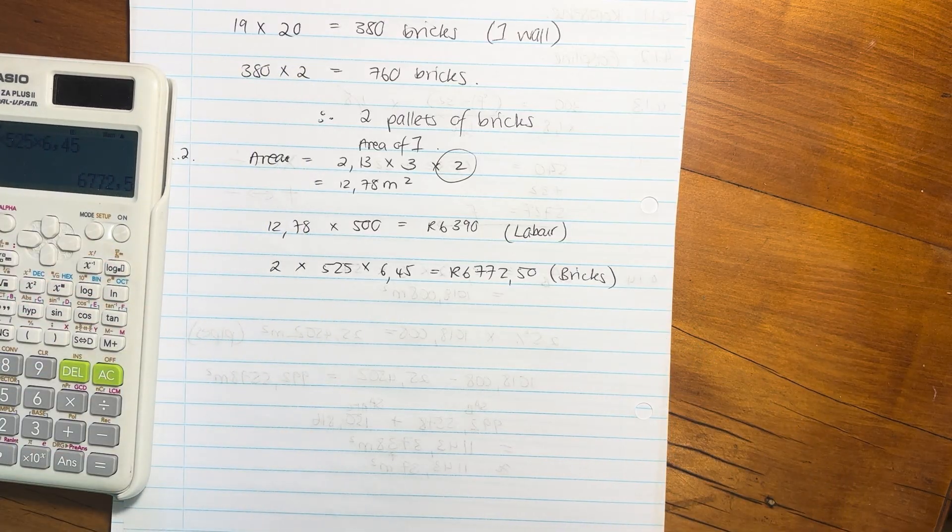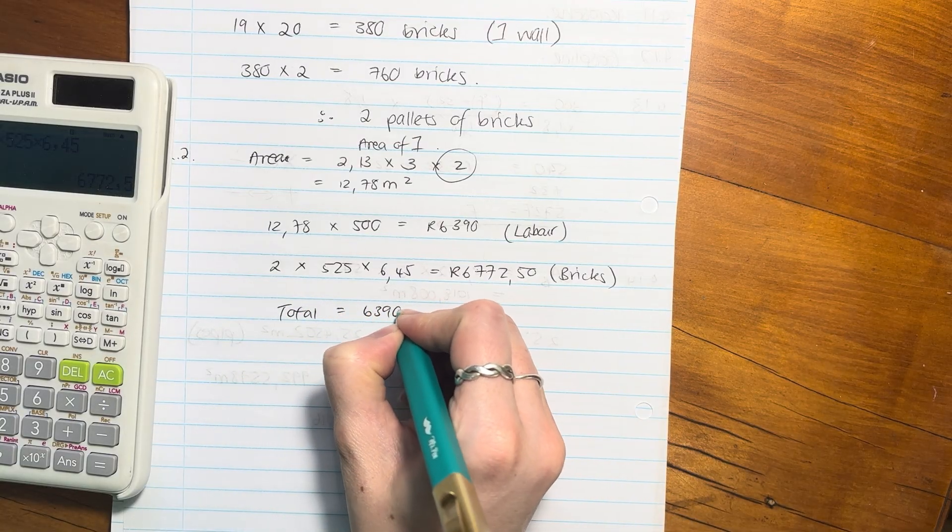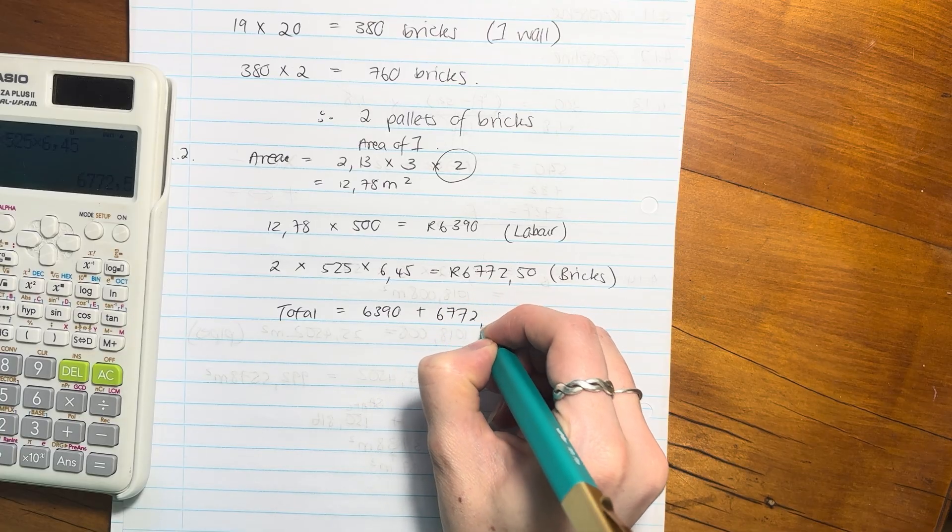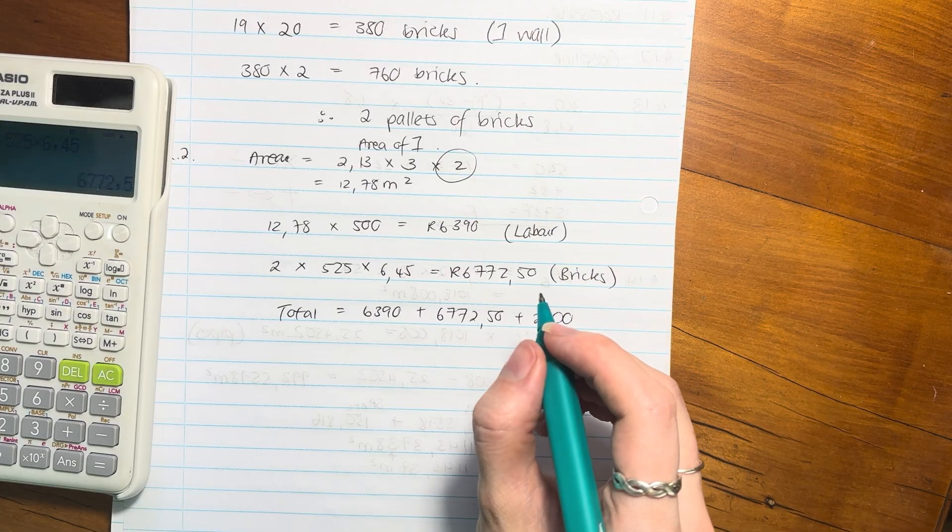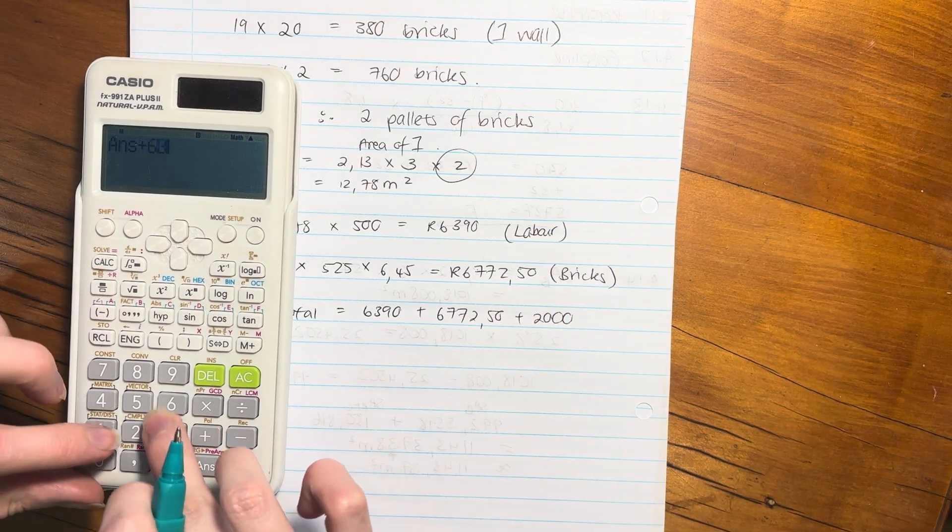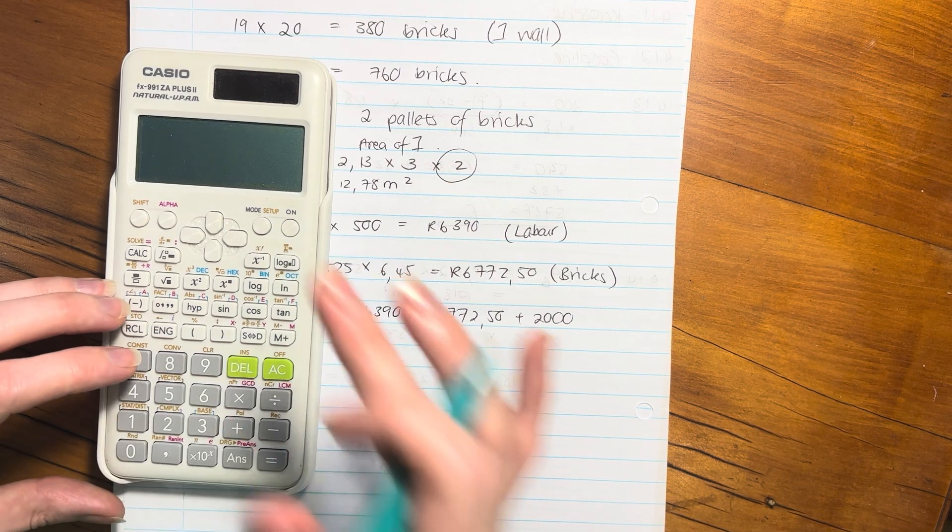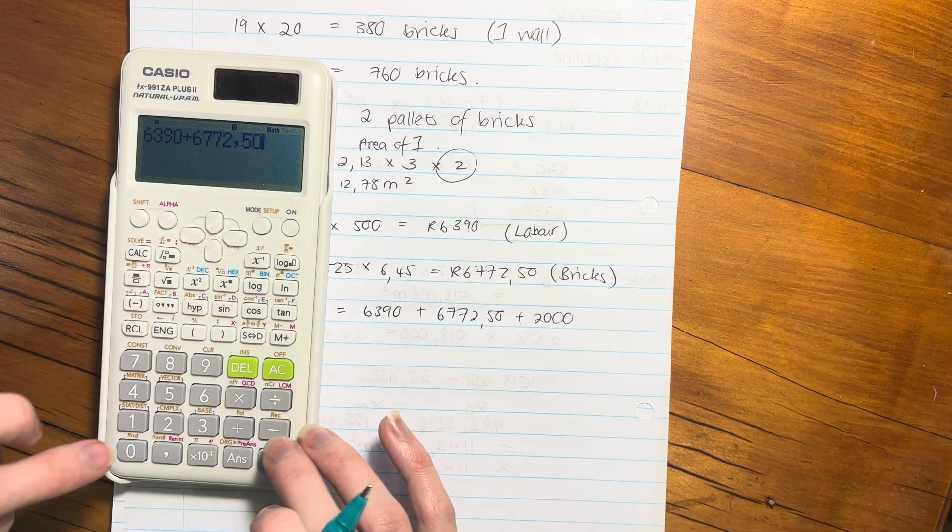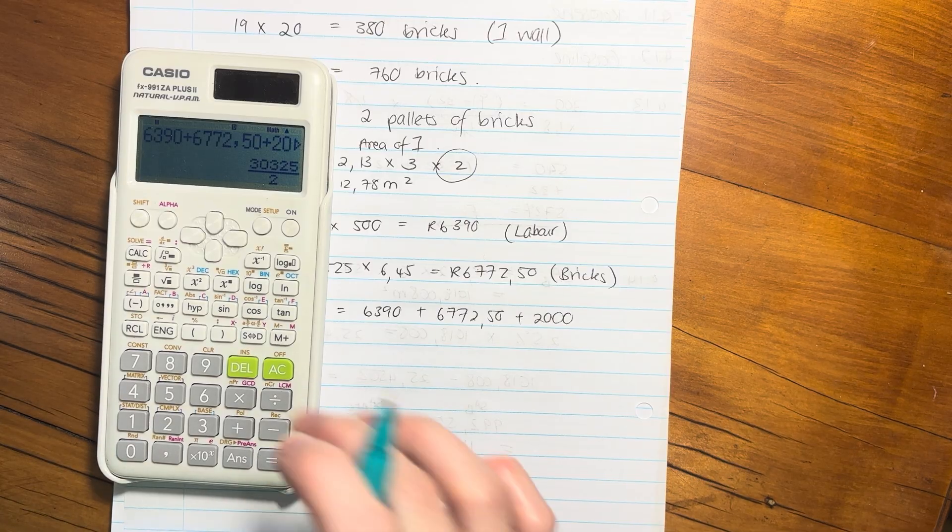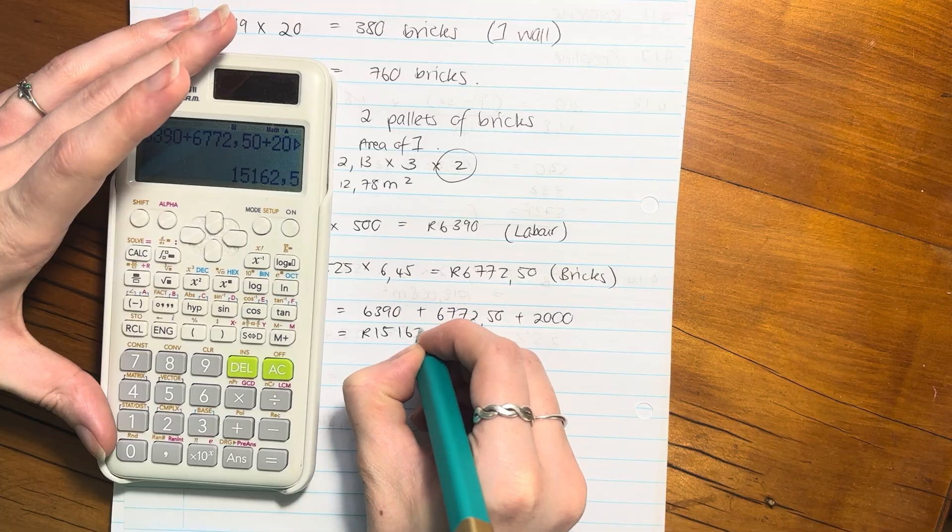Remember, there's this other material of 2000 rand. The total is going to be 6,390 plus 6,772.50 plus 2,000. Let's make sure we add all of them together. The total is going to be 15,162.50.